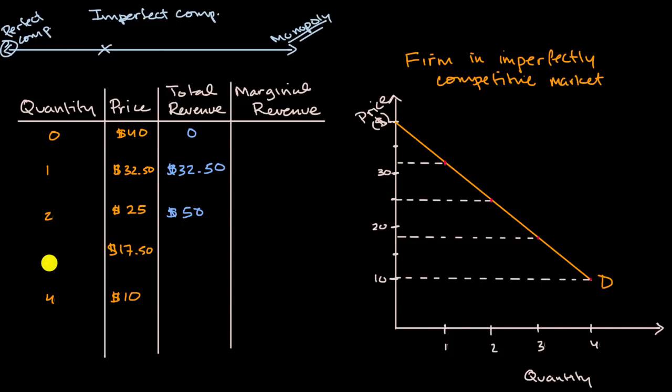Now when you go to three, the market price that you can get is $17.50. That is going to be $52.50 of total revenue.